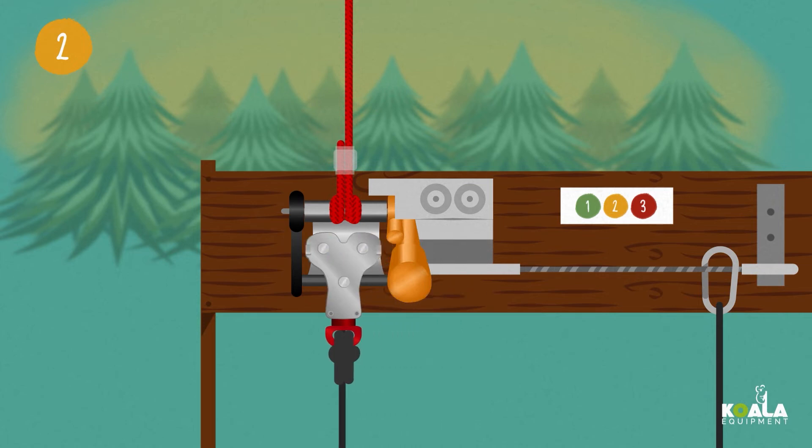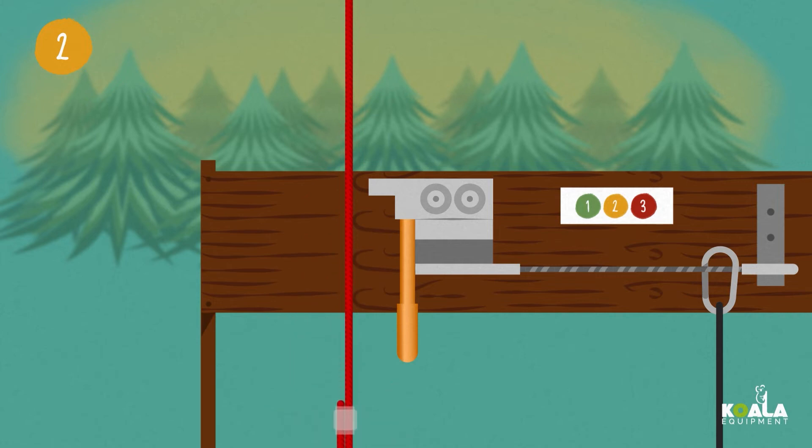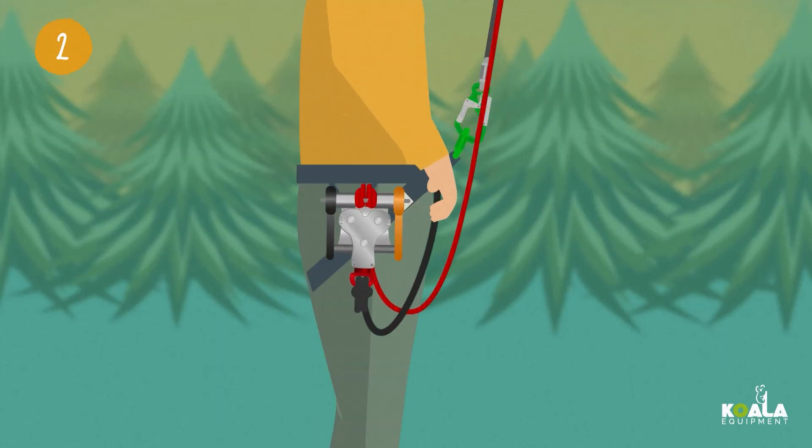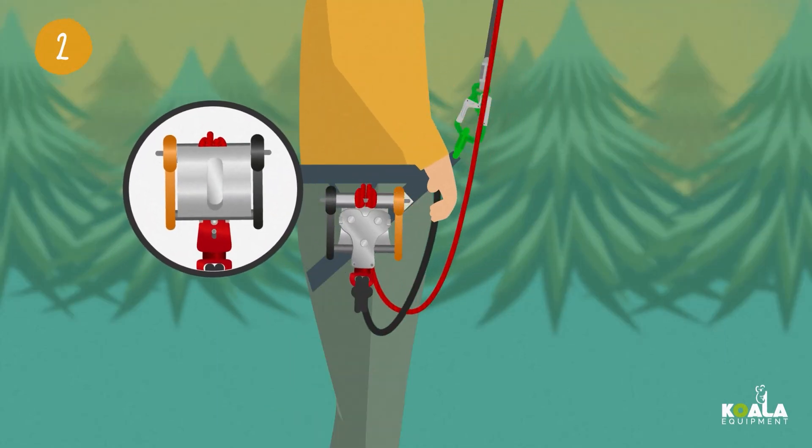Keep the orange handle up and slide the pulley into the shuttle. Then lower the handle, but hold on to the shuttle. Finally, fix the shuttle onto the side of your harness with the clip on the back.